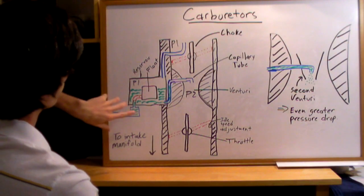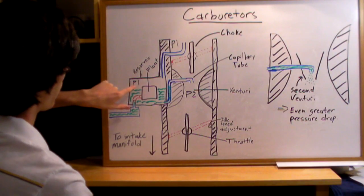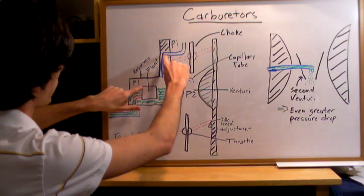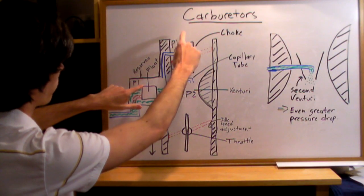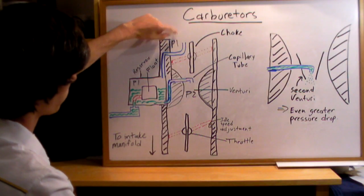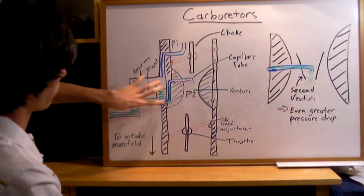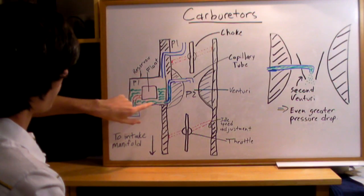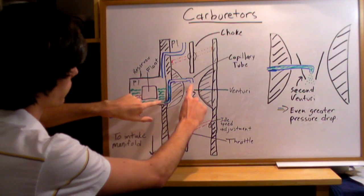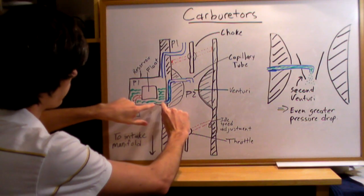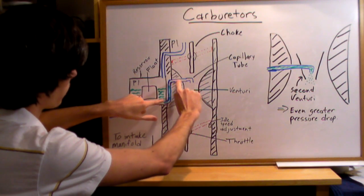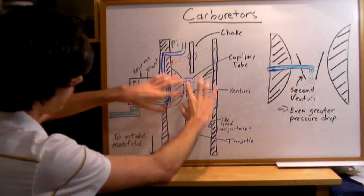So you're going to have fuel here with a capillary tube that goes out, so it's going to have the same pressure as atmospheric. Then you'll have fuel inside of this little box, and as the pressure drops within this venturi, the fuel is going to flow through this tube and spray out into here.